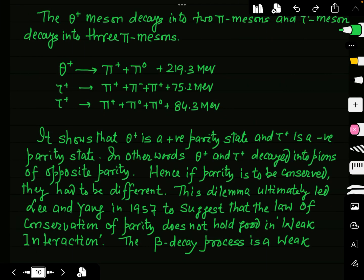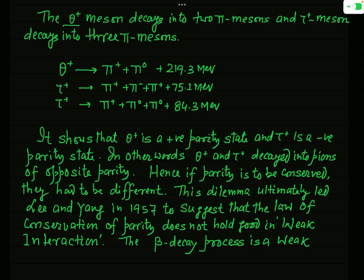The theta-plus meson decays into two pi mesons, whereas the tau-plus meson decays into three pi mesons. Specifically, theta-plus decays into pi-plus and pi-zero. The tau-plus suffers two types of decay: in the first mode it decays into pi-plus, pi-minus, and pi-plus; and in another mode it decays into pi-plus, pi-zero, and pi-zero.